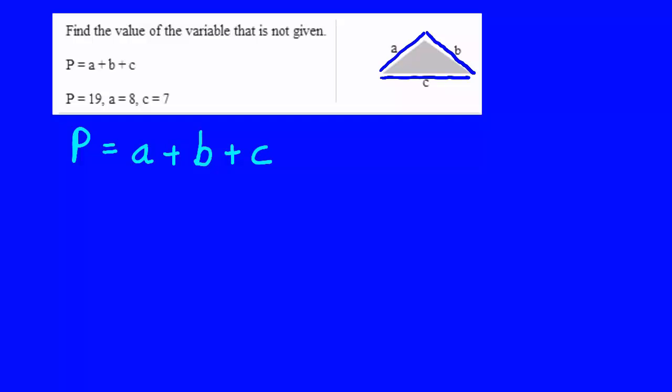And we're told what P is. It's 19 units long. That's all of the sides added together. We're told what A is. It's 8 units long. We are not told what B is but we are told what C is. It's 7 units.